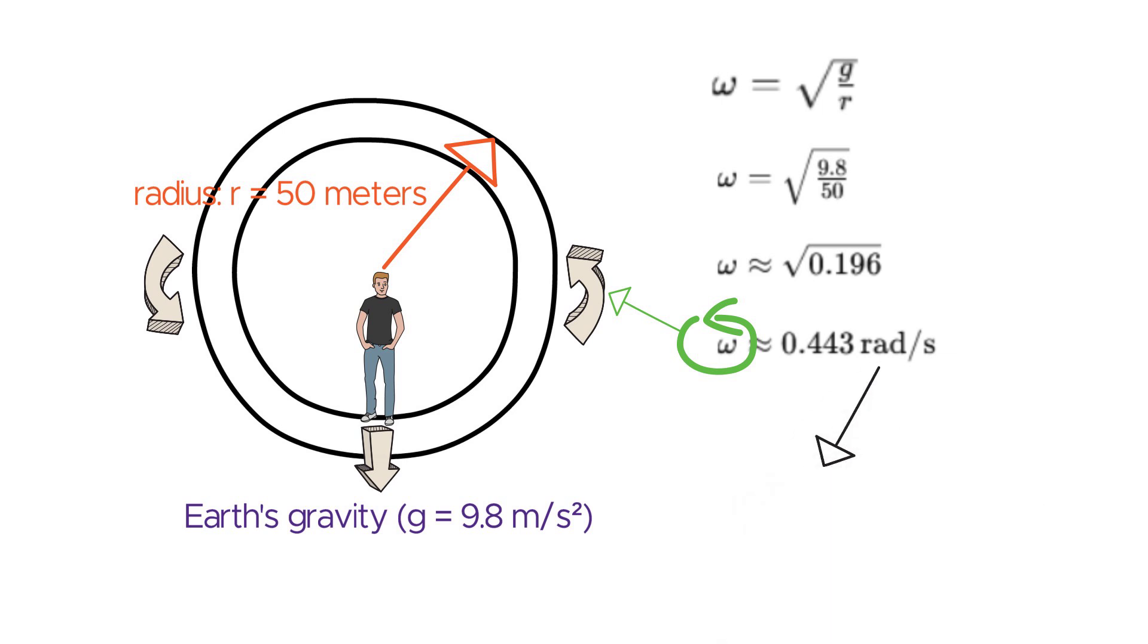One radian per second is roughly 57.296 degrees per second or 9.549 revolutions per minute. While the centrifugal force method seems straightforward, there are several challenges and considerations we need to consider.